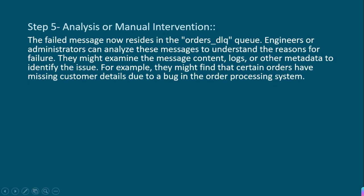Step five is analysis or manual intervention. The messages in orders_DLQ will be reviewed by engineers or the producer team for manual intervention — they will analyze the particular message which has been pushed by the consumer to orders_DLQ. The failed message now resides in orders_DLQ. Engineers or administrators can analyze these messages to understand the reason for failure, examining message content, logs, or other metadata to identify the issue. For example, they might find that certain orders have missing customer details due to a bug in the order processing system.